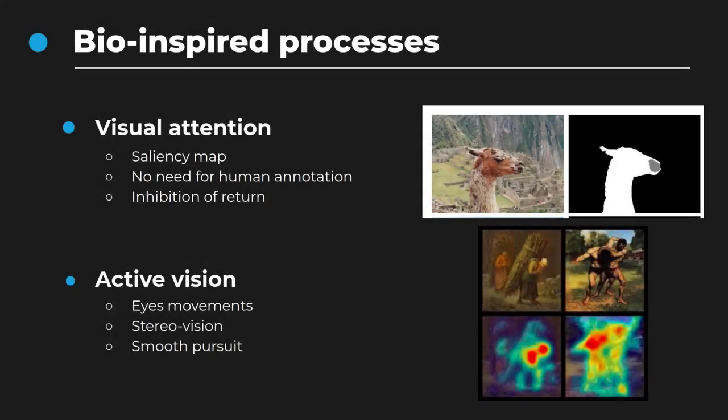We humans learn through interaction with the world, and robots being embodied could follow a similar learning path. To learn, we use facilitation strategies like visual attention, which allow us to focus on a particular point, retaining only the most salient information. This process, coupled with active vision, gives a facilitation mechanism to perform complex tasks like segmentation, as not all the visual information is used — only a part.